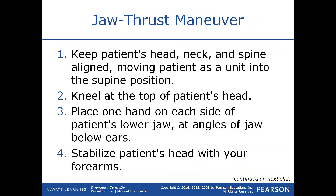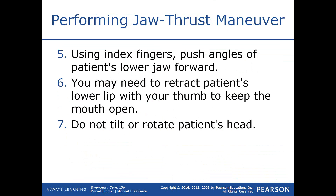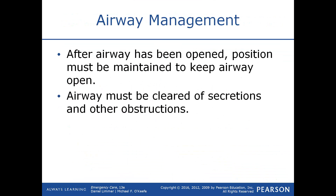Keep the patient's head, neck, and spine aligned, moving the patient as a unit into a supine position. Kneel at the top of their head, place one hand on each side of the patient's lower jaw by the ears, and raise the jaw up off the back of the throat to open the airway. You may use your thumbs to retract the patient's lower lip to keep the mouth open. Once in position with jaw thrust, that is where you stay. Even when using airway adjuncts to keep the tongue off the back of the throat, you still need to maintain good head tilt chin lift or jaw thrust.